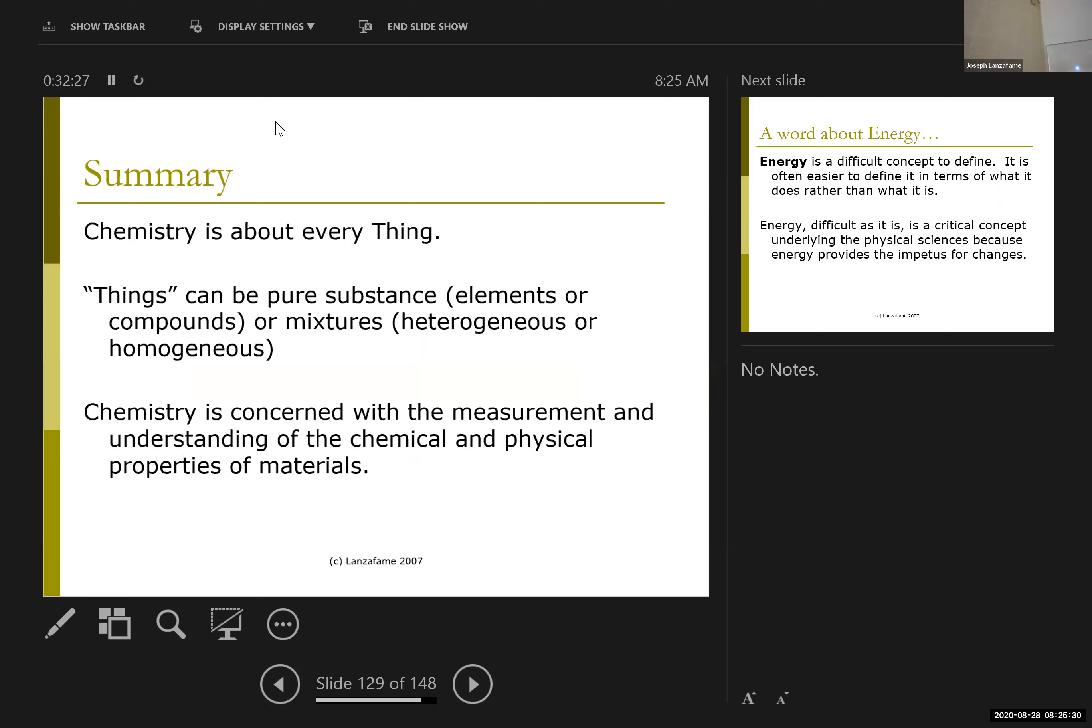In the end, my physical properties will depend on whether I'm a pure substance or a mixture, and my chemical properties will depend on whether I'm an atom or a molecule. And so, we bounce back and forth between this chemical and physical picture a lot.